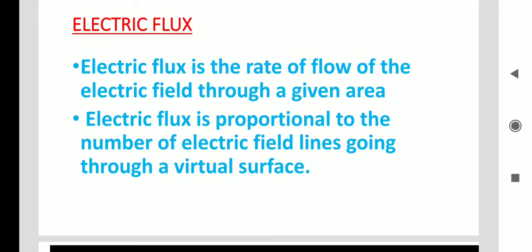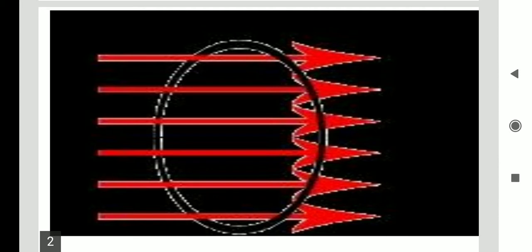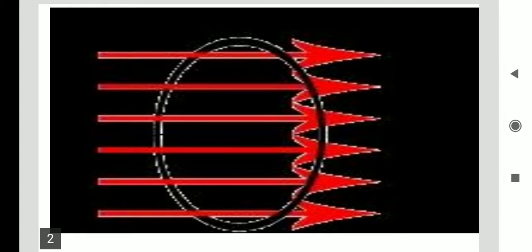What is electric flux? Looking at the figure, through a certain area some lines are passing. These lines are electrical field lines — the lines which are generated in an electric field. It is an imaginary concept; in reality we cannot see the electrical field lines.